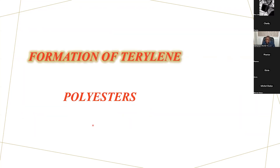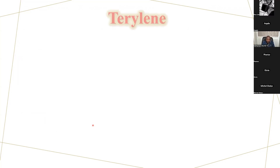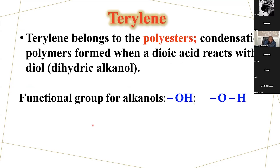Can I show you Terylene? Terylene is the simplest. For Terylene, it's a polyester because it uses an acid and an alcohol. That is now esterification — that's why we call it a polyester.